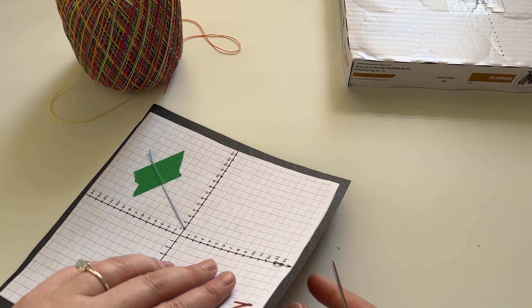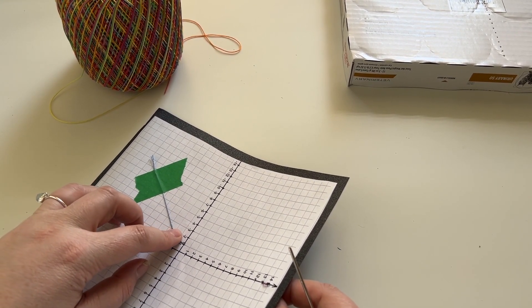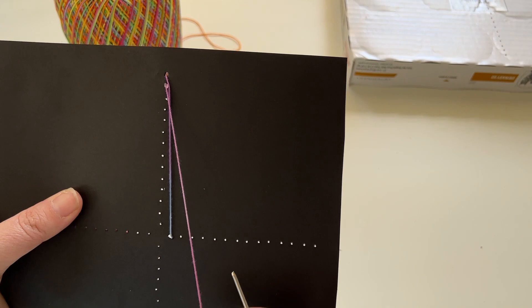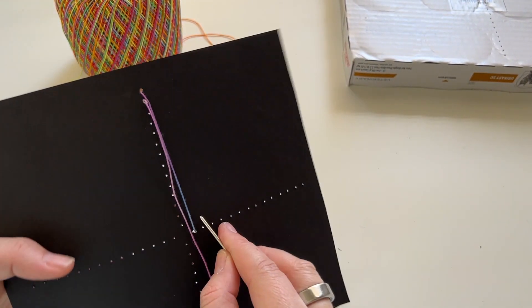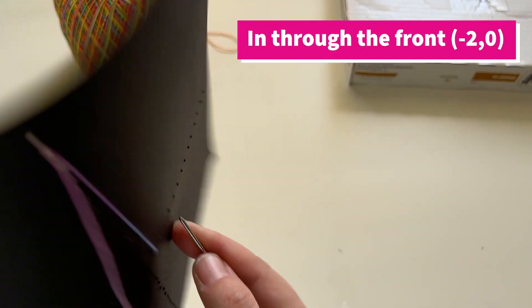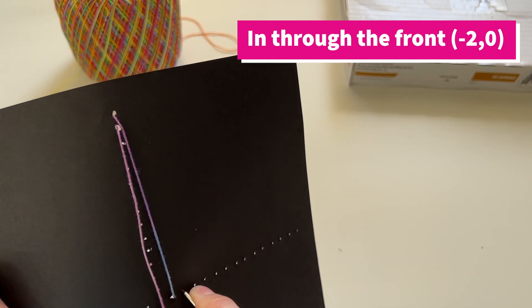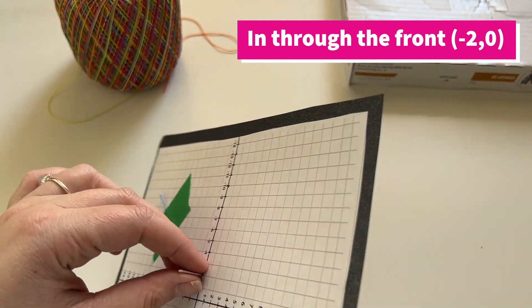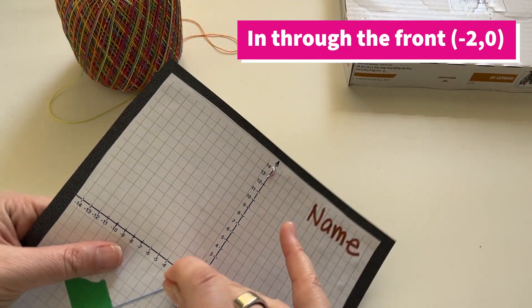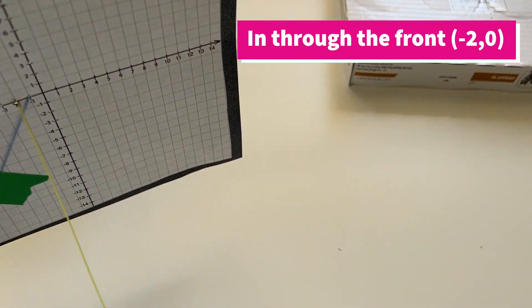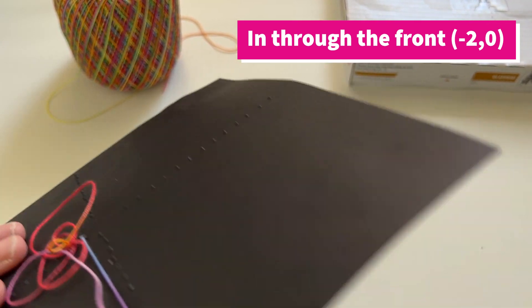Then here we're going to be going through negative two. So I'm going to come over and I can see negative two is right here because it's back there. So if I'm looking, I'm coming through to negative two on the x-axis, bringing it down.